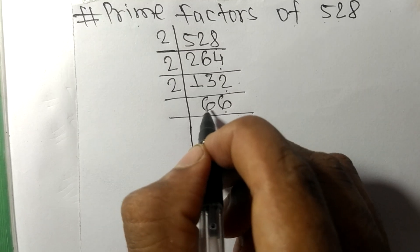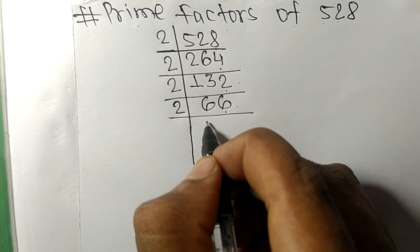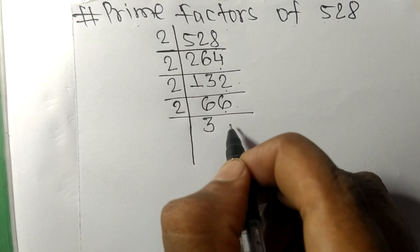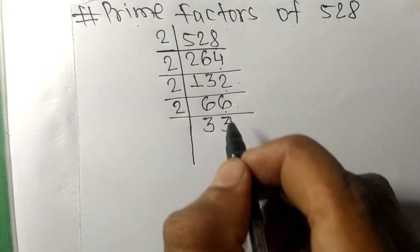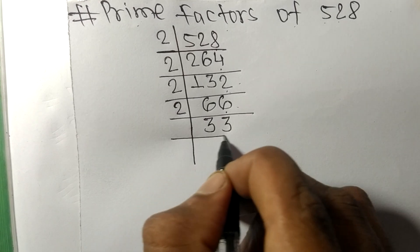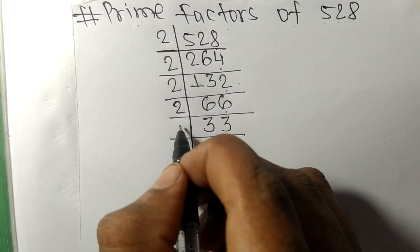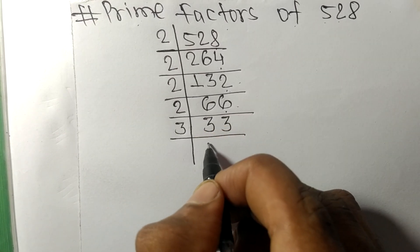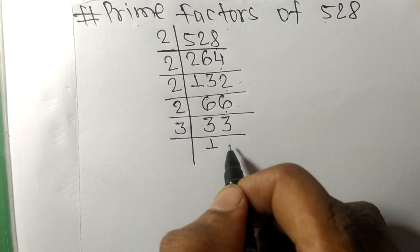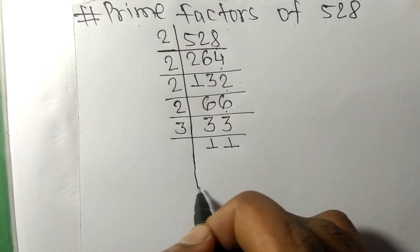33 is divisible by 3. 3 times 1 is 3, 3 times 1 is 3. Now we got 11, which is a prime number.